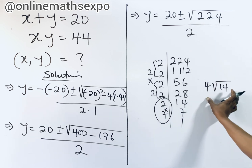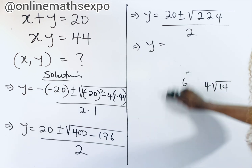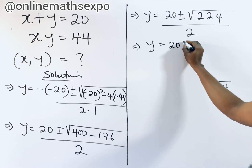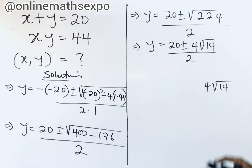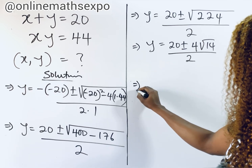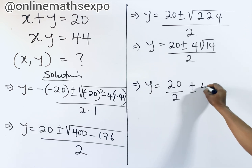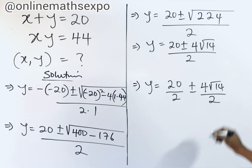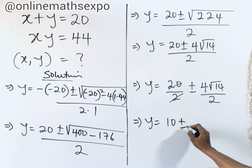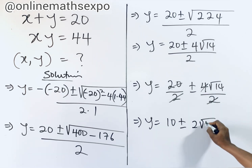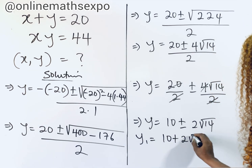So simplifying, we have y equals 20 plus or minus 4 root 14, divided by 2. Splitting the fraction: 20 divided by 2 plus or minus 4 root 14 divided by 2. This gives us y equals 10 plus or minus 2 root 14. So the first value of y is 10 plus 2 root 14, and the second value of y is 10 minus 2 root 14.